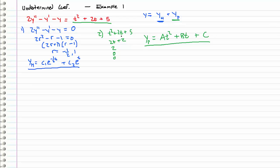In general, for a polynomial of degree n, we assume a particular solution of a t to the n, plus b t to the n minus 1, plus c t to the n minus 2, and so on. So in this case we had a second degree polynomial, which is why we have a t squared plus b t plus c.